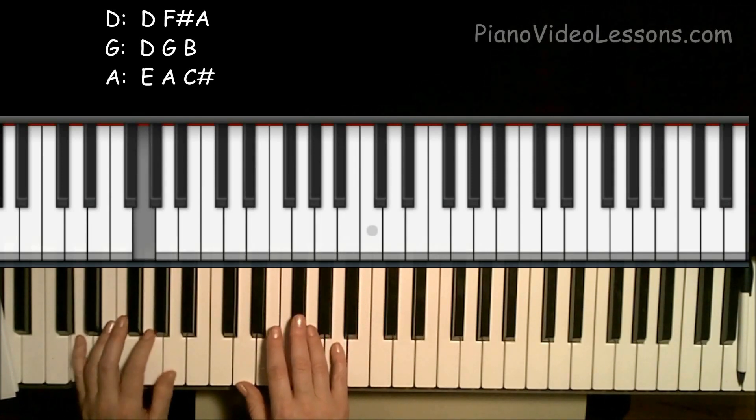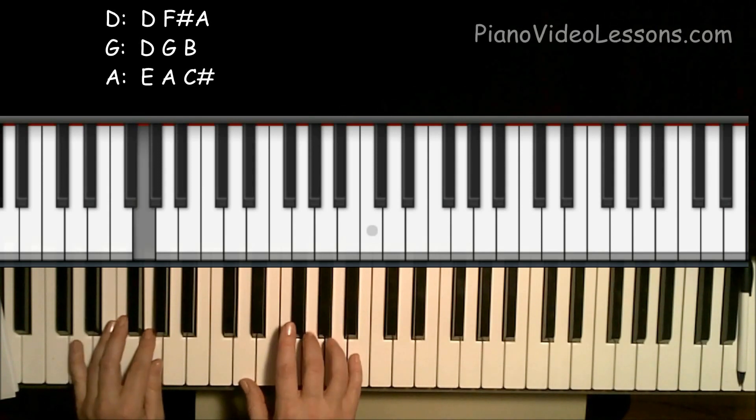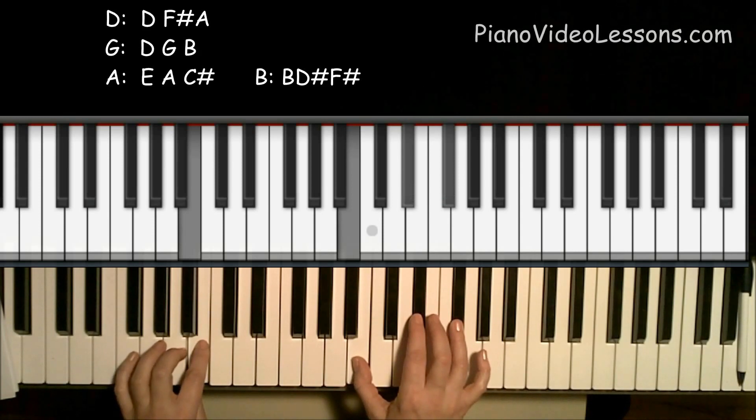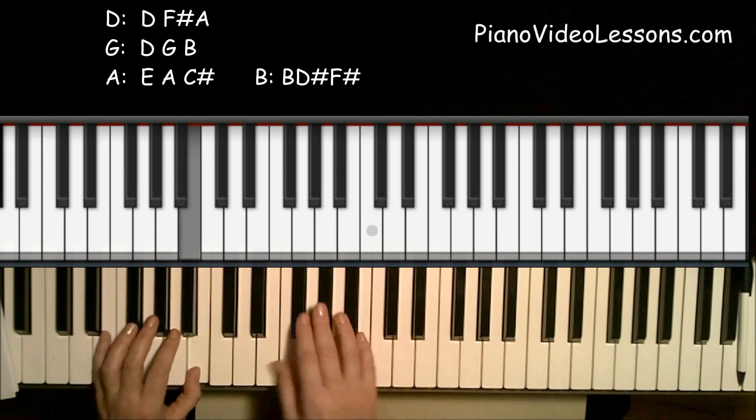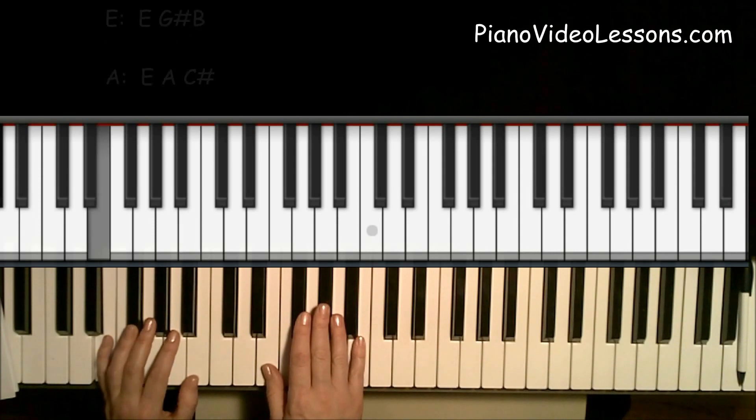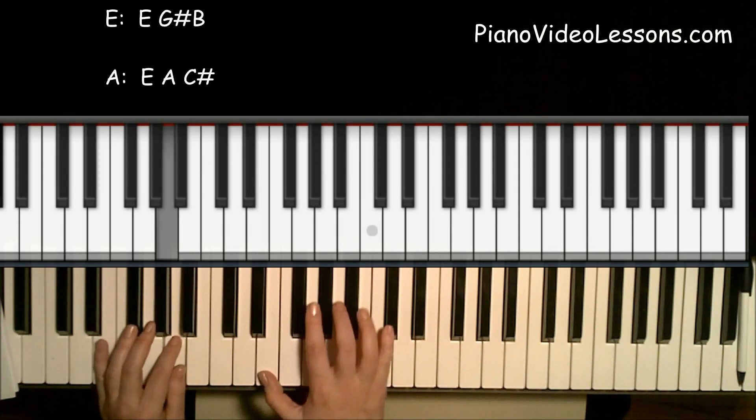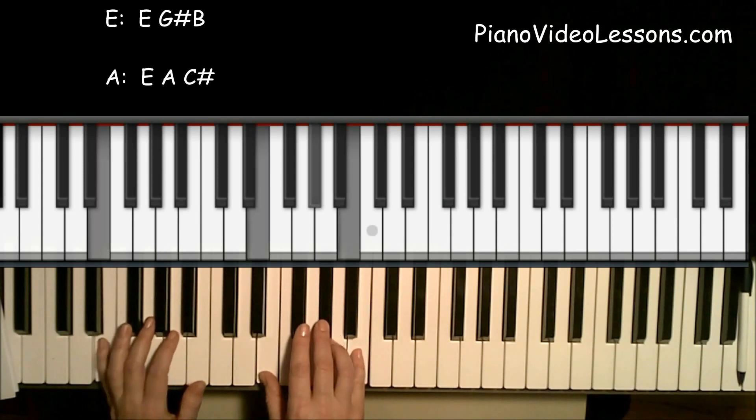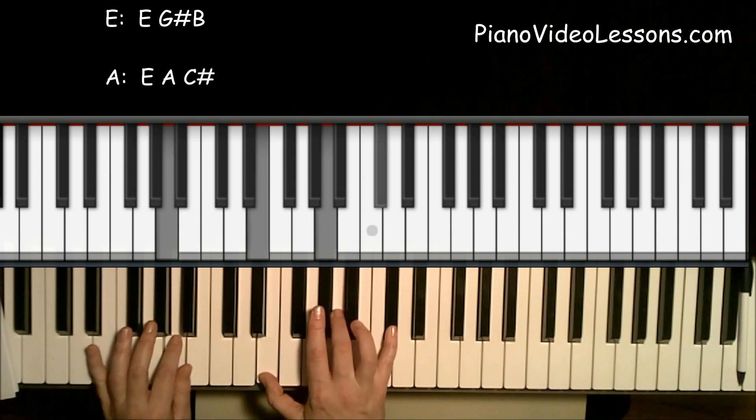This time, we're going to end by going to B major, which is B, D, F sharp. This changes our key to E. So the E chord is E, G sharp, B. The A chord is C sharp, E, and A.